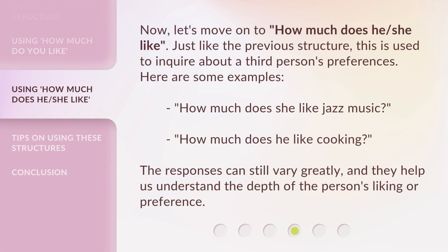Now, let's move on to 'How much does he/she like?' Just like the previous structure, this is used to inquire about a third person's preferences. Here are some examples: 'How much does she like jazz music?' 'How much does he like cooking?' The responses can still vary greatly, and they help us understand the depth of the person's liking or preference.